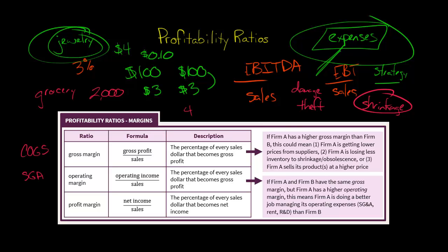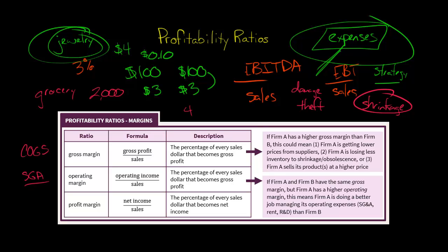Operating margin measures the company's ability to manage its operating expenses. Gross margin only covers COGS — SG&A is not affected by that. So when we look at operating margin, we focus on those operating expenses. If two companies have the same gross margin but one has a much higher operating margin, that company is doing a better job managing SG&A or R&D. A company could even have a lower gross margin but a higher operating margin because they run really lean on operating expenses like SG&A.